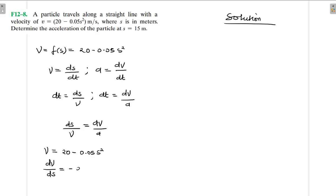dv/ds will give us, this is just a constant so it would be zero, so it would be minus 2 × 0.05s² and then if we multiply that it gives us -0.1s.